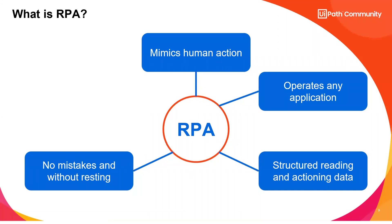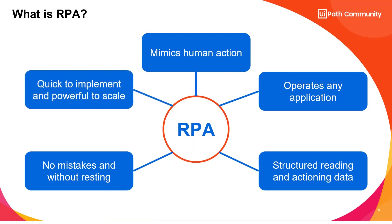Quick to implement means you don't have to write a whole lot of code. Even someone without a programming background can implement it. Scale means today you need one robot, tomorrow you need five — you don't have to write extra code; that can be done in simple clicks. That is why RPA is becoming so popular nowadays.